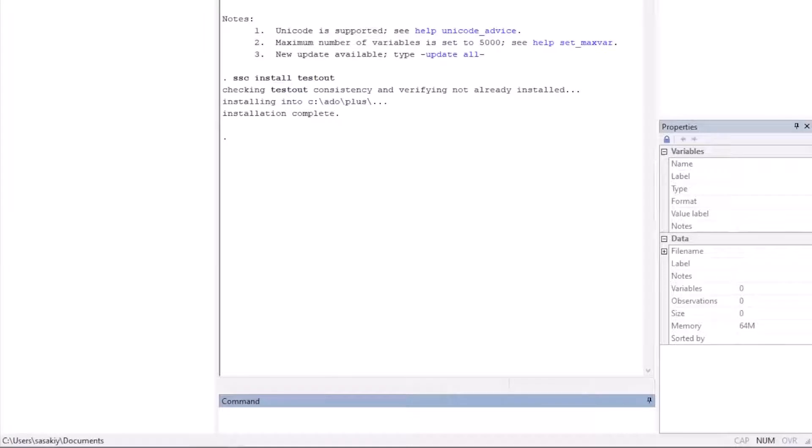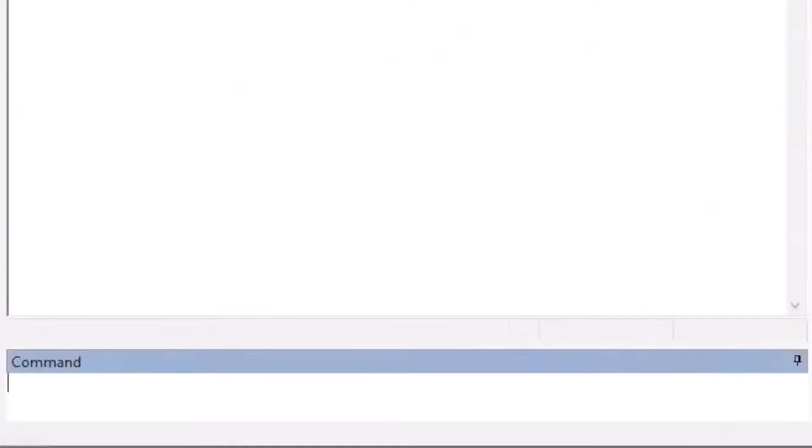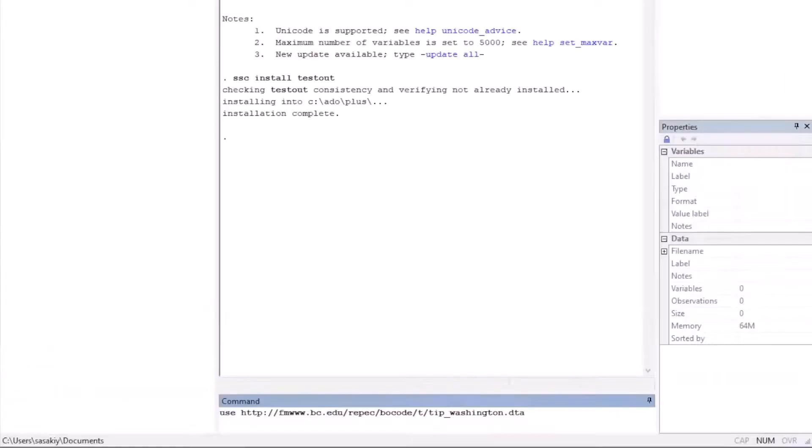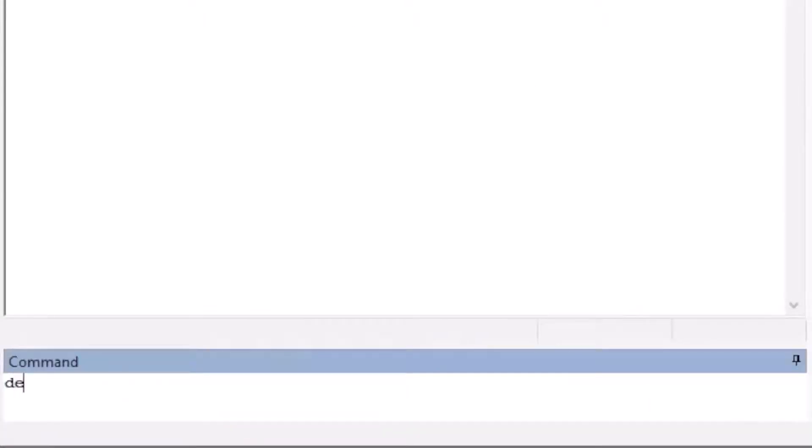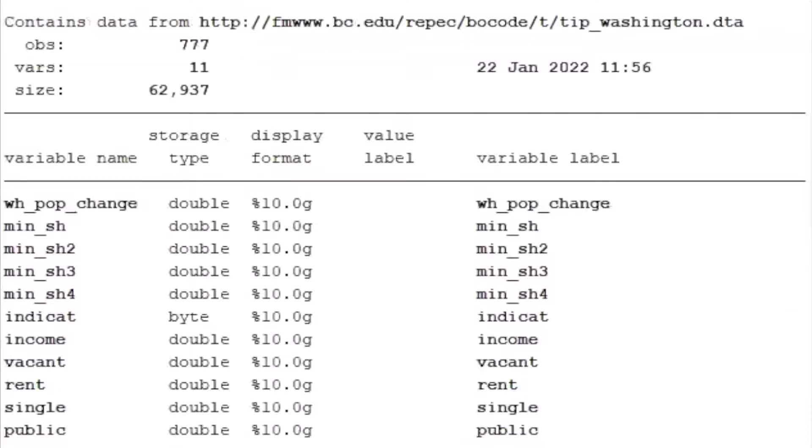Let's try this command with a real dataset. We use the data available online from the following URL. Describe the data and we find the following variables. Suppose that a researcher runs a regression of the first variable on the other variables.